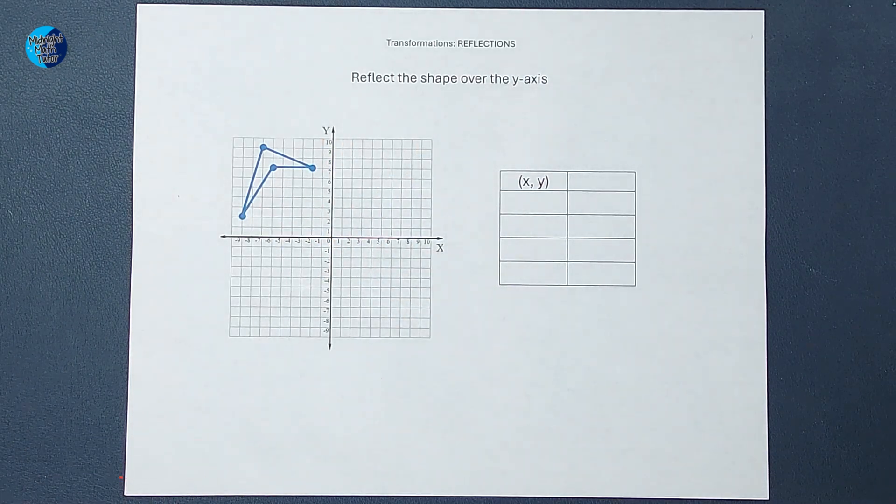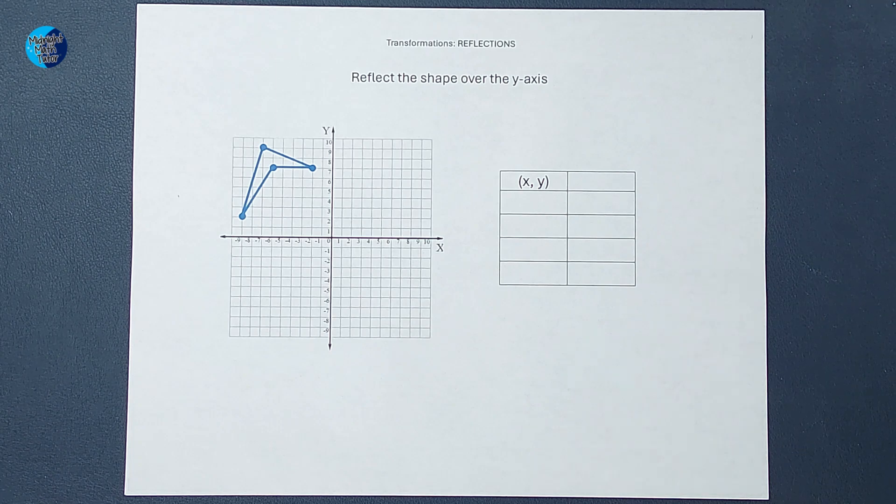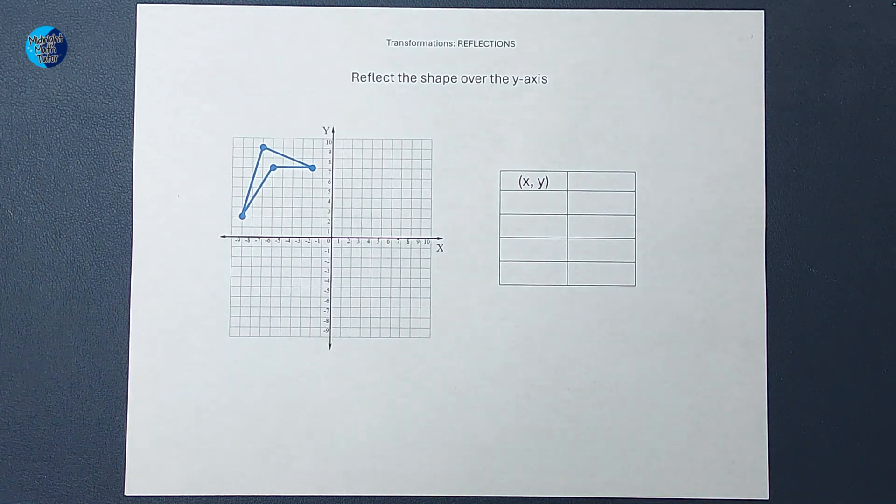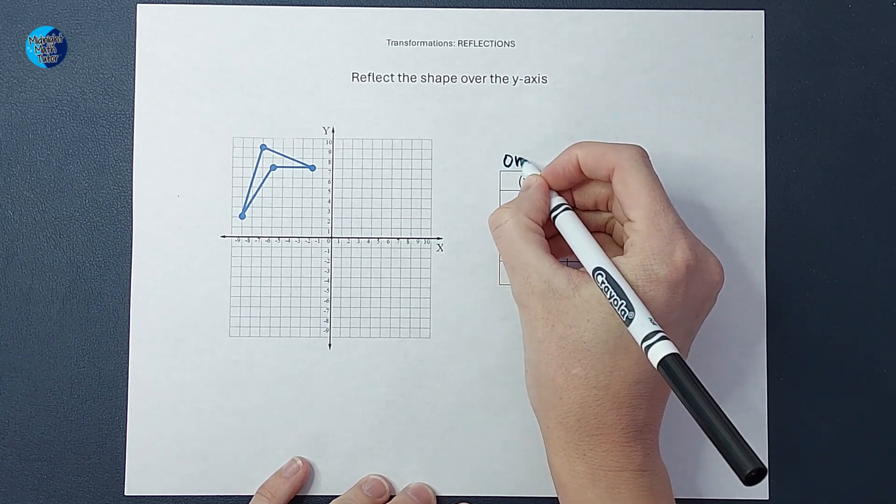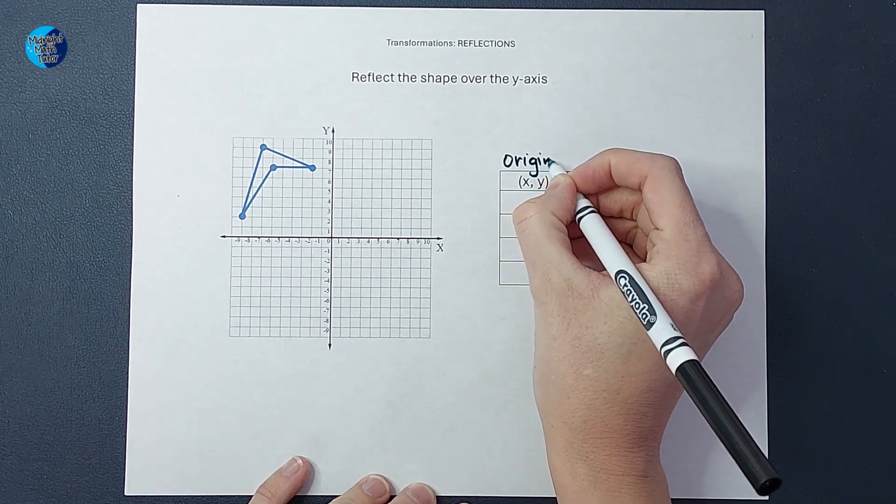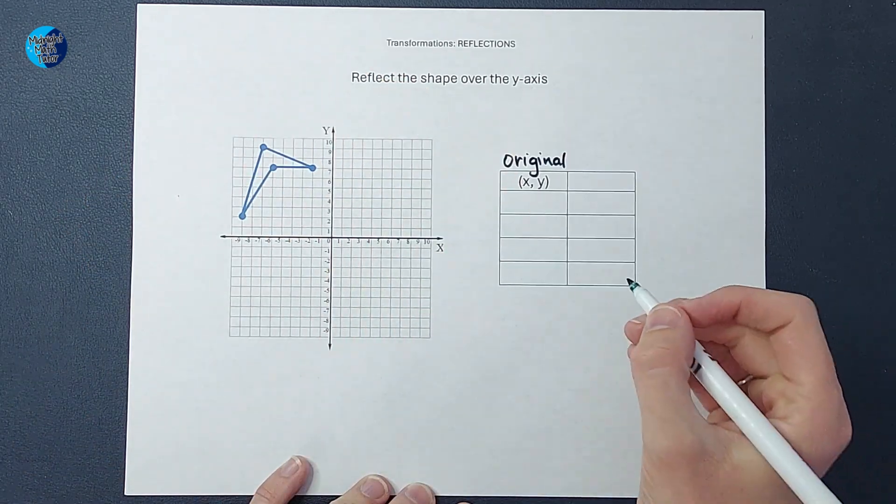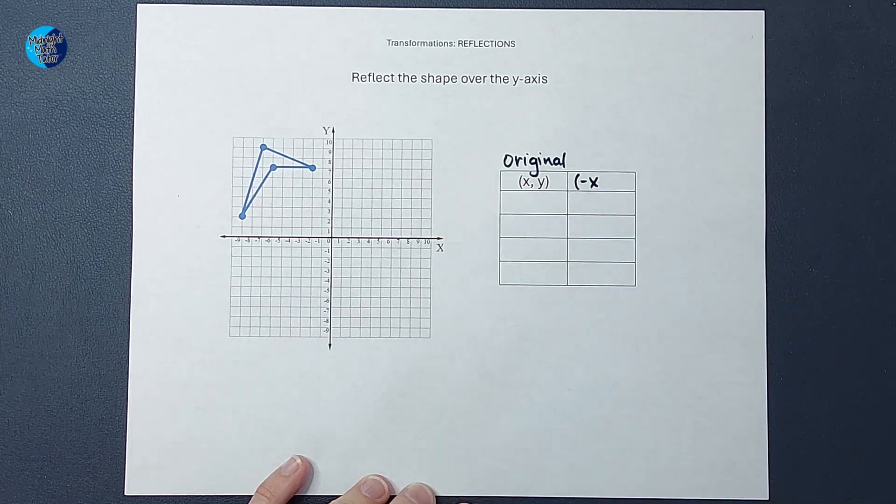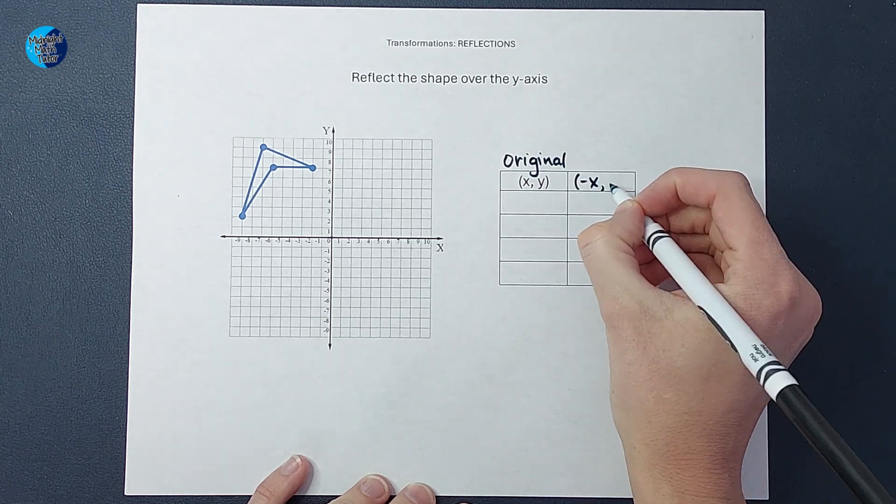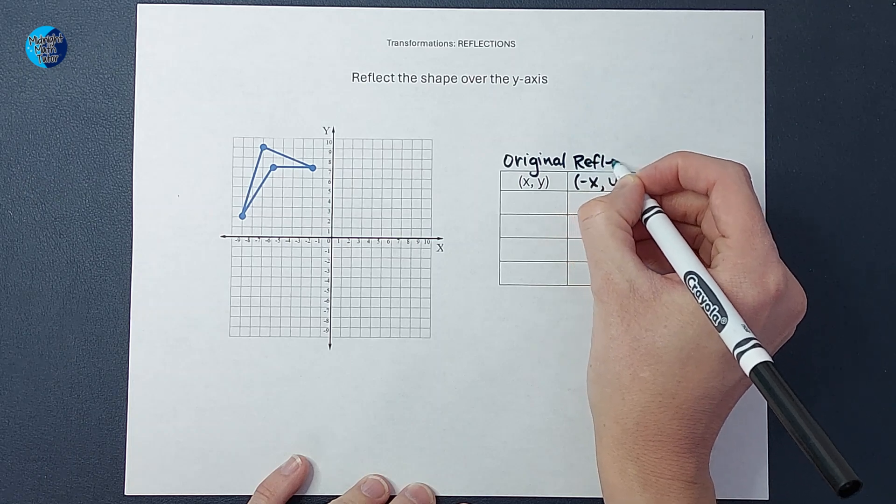So if I think about that for a minute, that means my y point in my ordered pair is staying the same. My x is changing, but the number is not changing, just the sign. So a way to write that would be if my original point is (x, y), the point on the shape that is reflected over the y-axis is going to be (-x, y). Changing the sign of x and y stays the same. That is for my reflected shape.